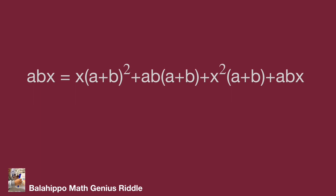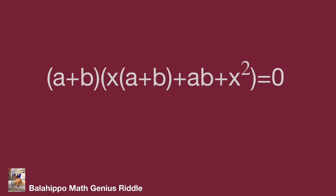Eliminating abx from both sides of the equation, then factorizing, we get the quantity (a plus b) multiplied by bracket x times (a plus b) plus ab plus x squared bracket equal to zero.